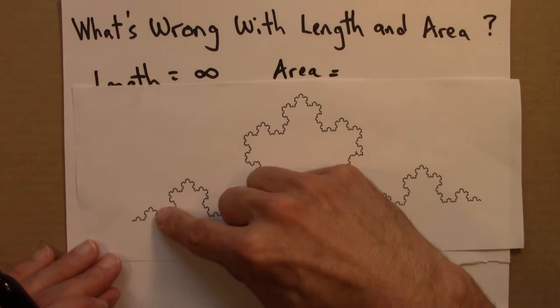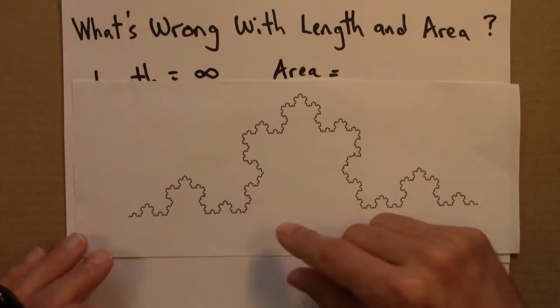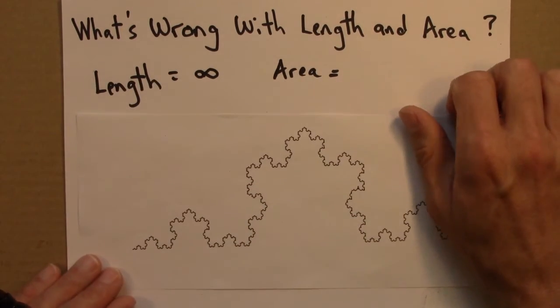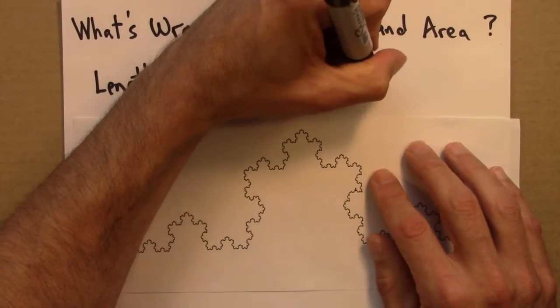And the lines, I mean, it's just, you know, no amount of line sort of gets to have an area. So the area for this would be zero.